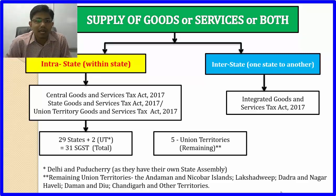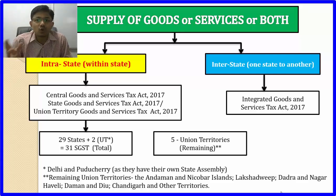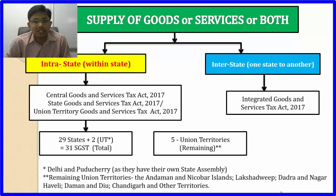For example, if a Delhi seller sells goods within Delhi, that case will attract CGST and SGST. If a Chandigarh seller sells in Chandigarh — since Chandigarh is a Union Territory — it will be CGST and UTGST. If the supply is interstate, meaning one state to another state, then IGST will apply. For example, a transaction from Delhi to Chandigarh is one state to another, so IGST will apply.